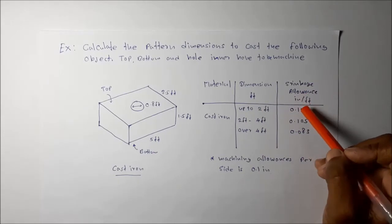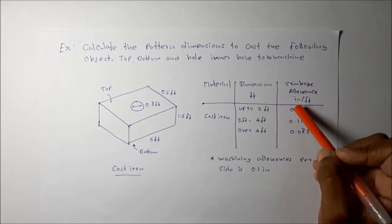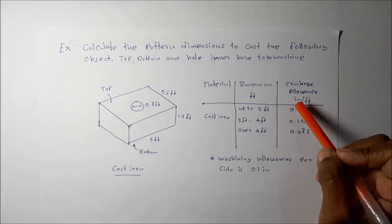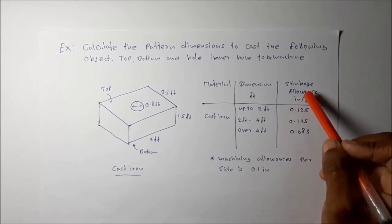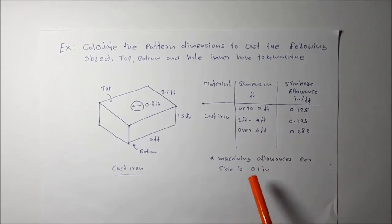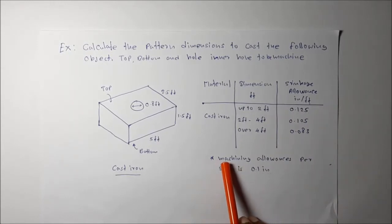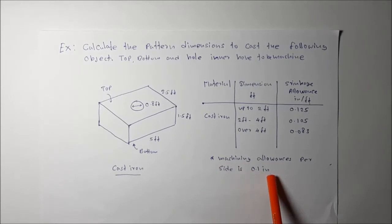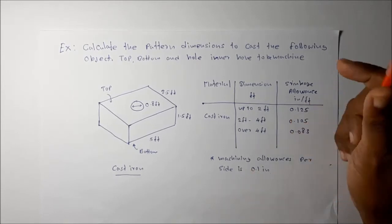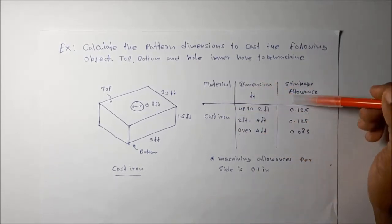From the table, shrinkage allowances for cast iron are given: up to 2 feet it is 0.125 inches per foot, and over 4 feet it is 0.083 inches per foot. The machining allowance per side is equal to 0.1 inches.